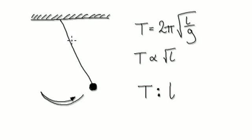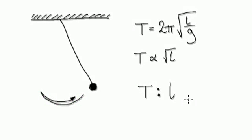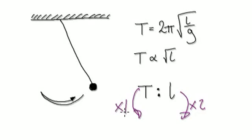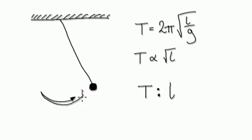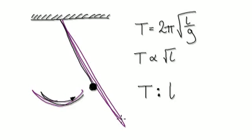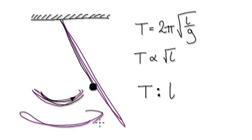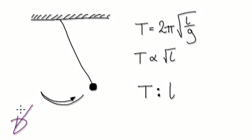My question is: what should I do to the length of the string in order to double the time it takes to do one swing? If I double the length of the string, then T gets multiplied by √2 — but I want to double the time. Press pause and have a go.